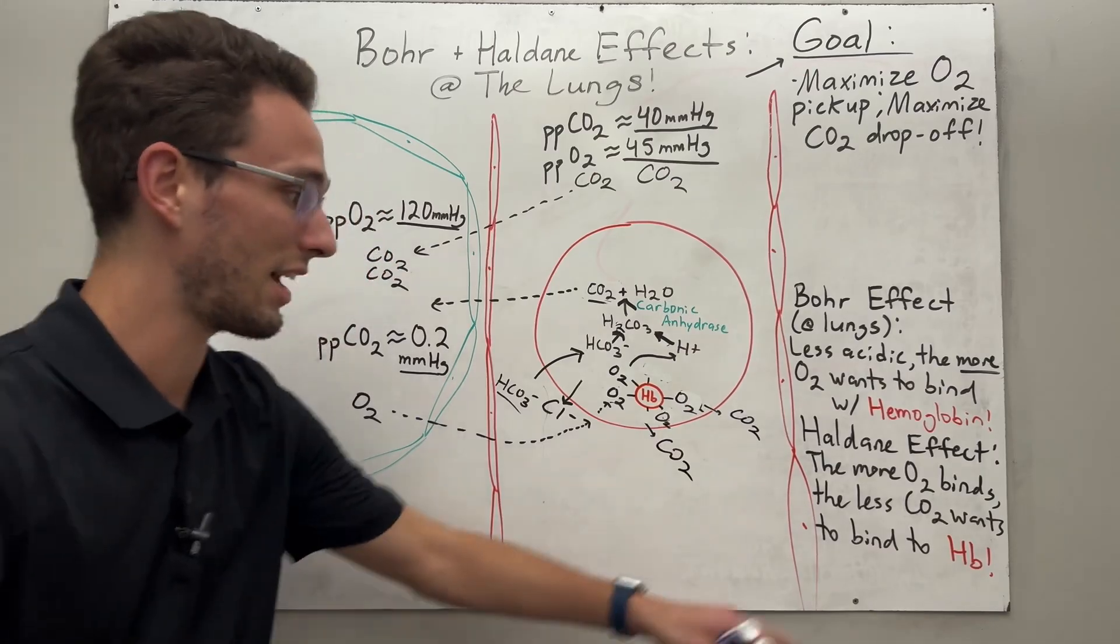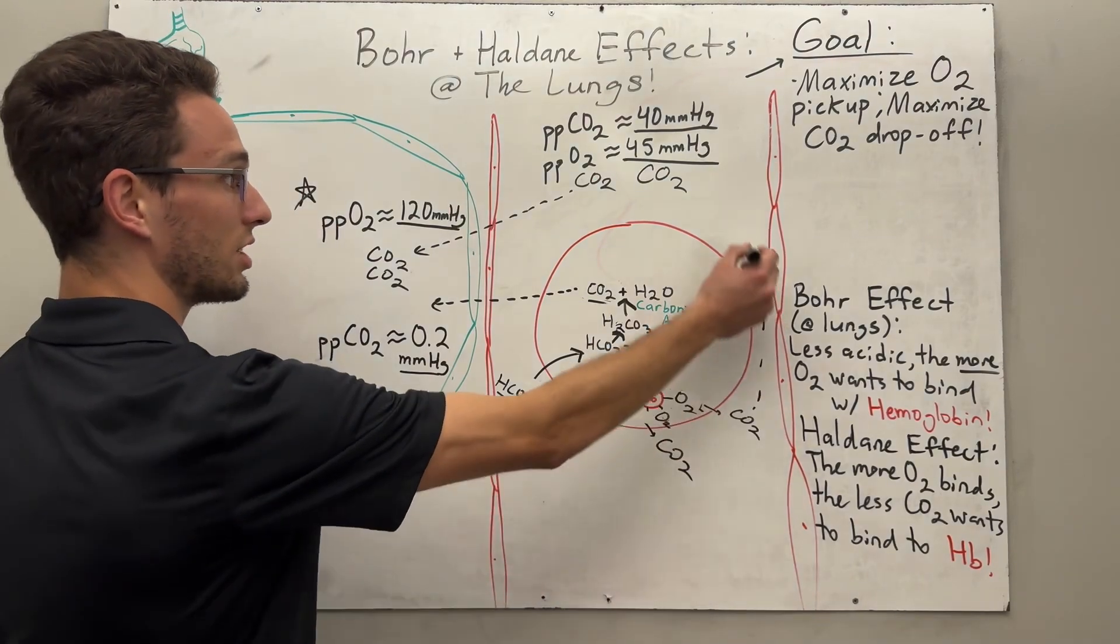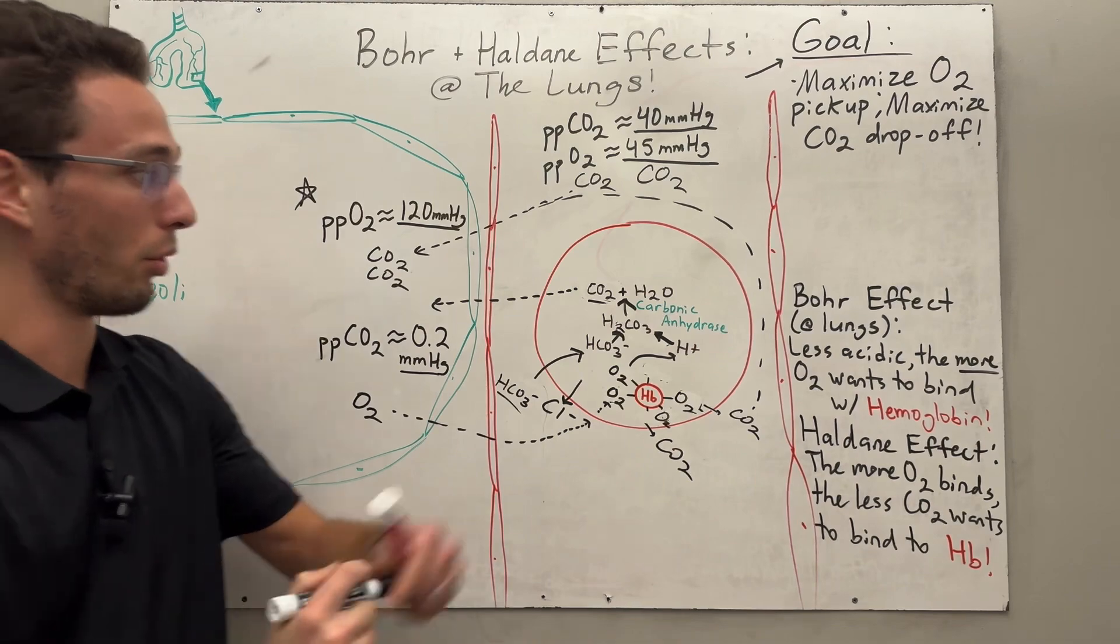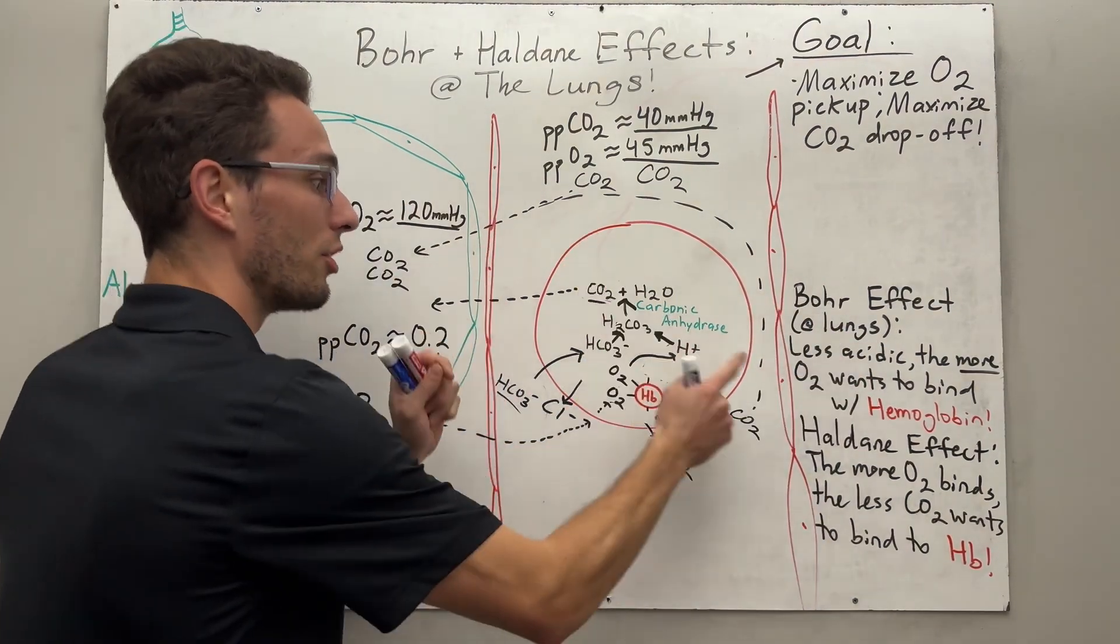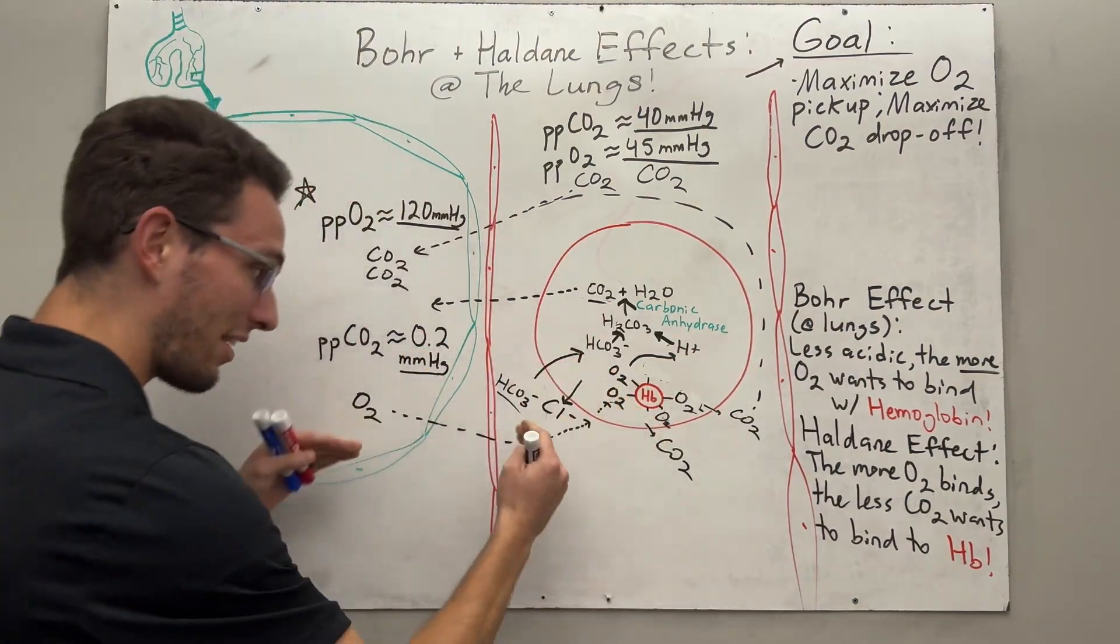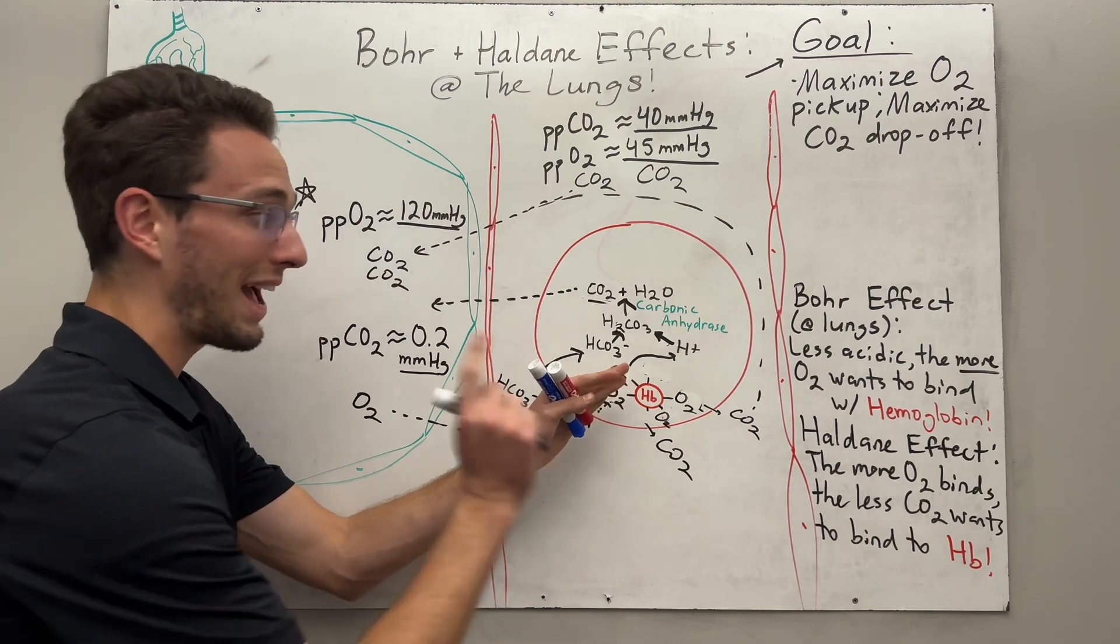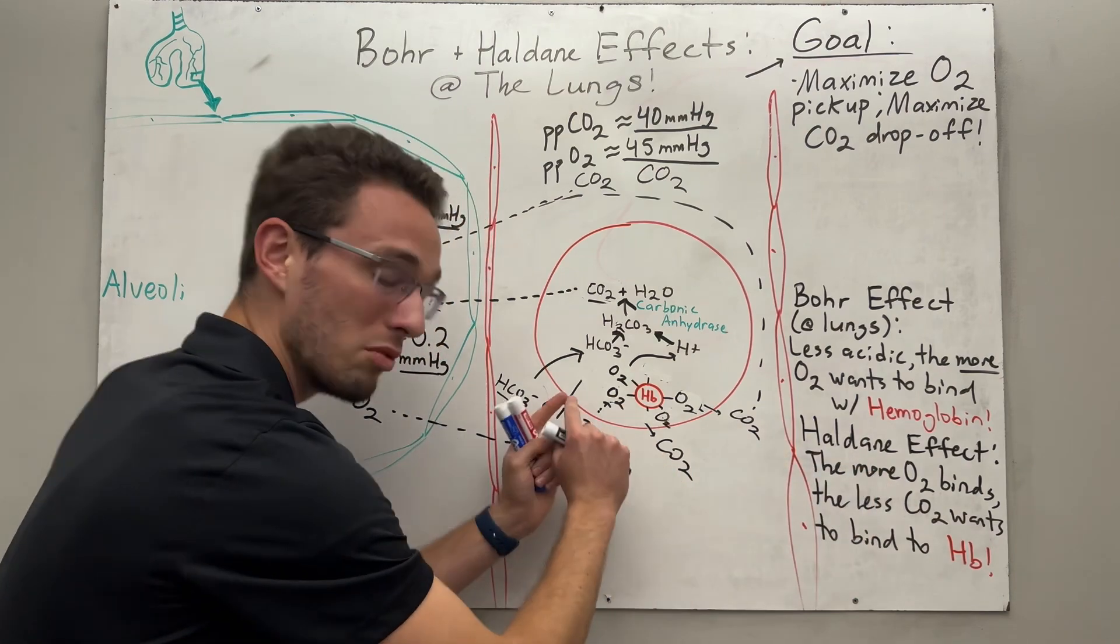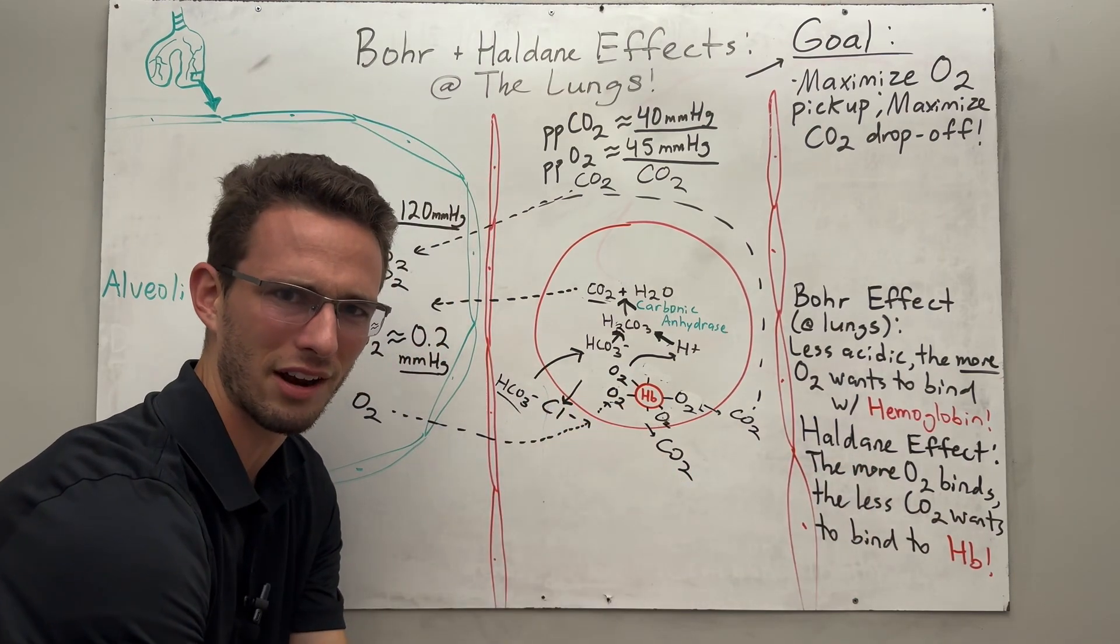And guess what? That process of the Haldane effect also allows CO2 to continue leaving into the lungs. So at the same time, the Bohr effect, because it's less acidic, the more oxygen wants to bind there down its concentration gradient. But as the oxygen begins to bind, Haldane effect kicks in and the CO2 leaves because it doesn't like oxygen being there.